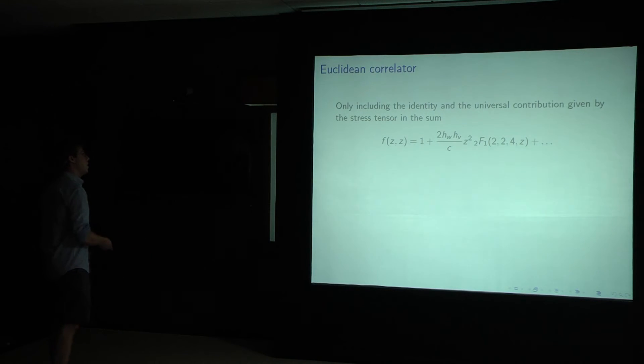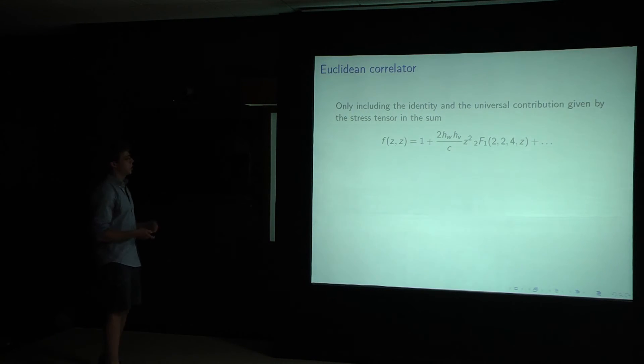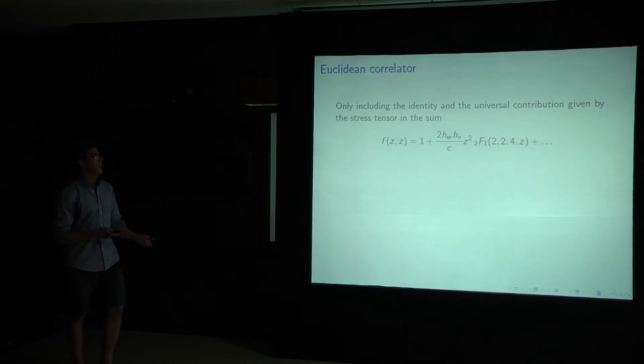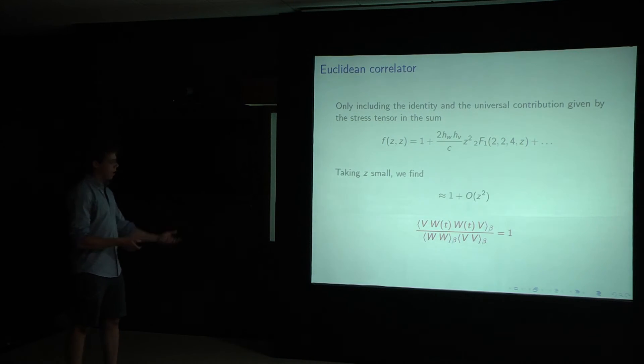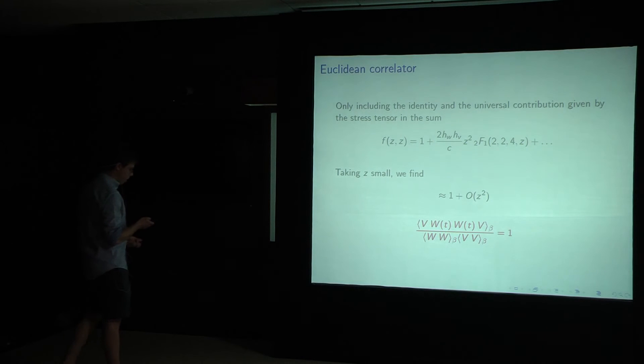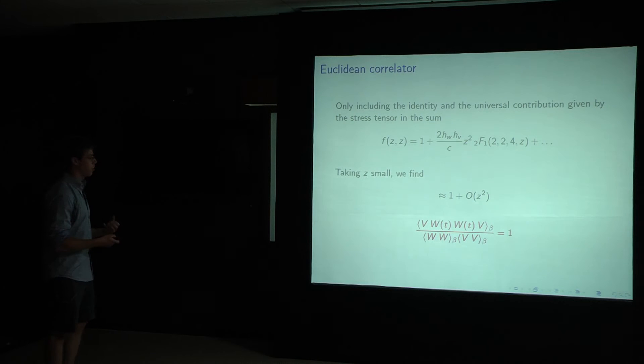And taking z small, I find that we get one. So on the primary sheet, as expected, this red norm of a perturb thermal state correlation function is equal to one.